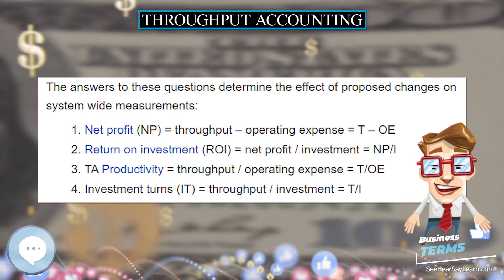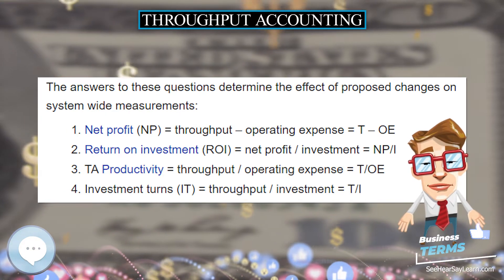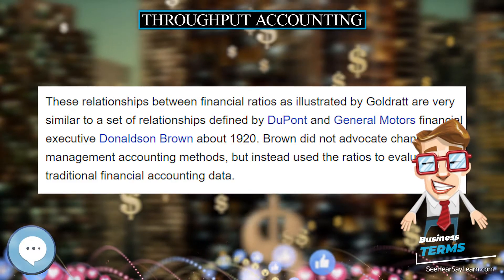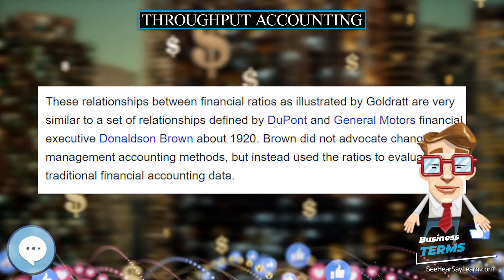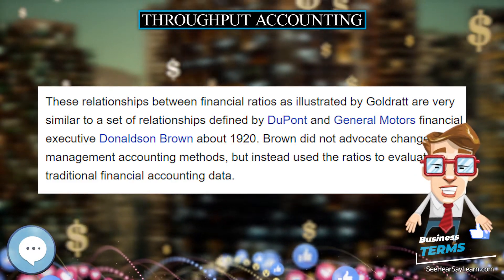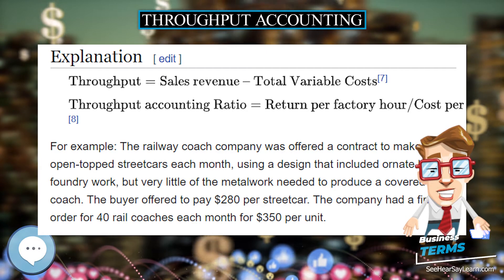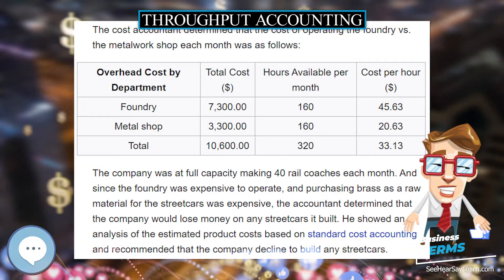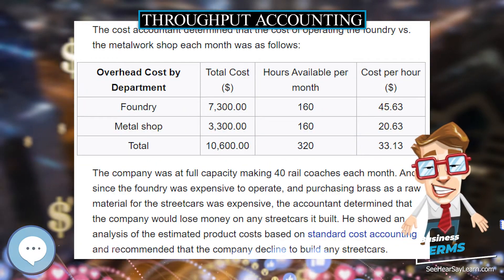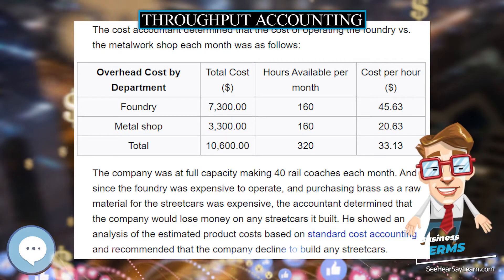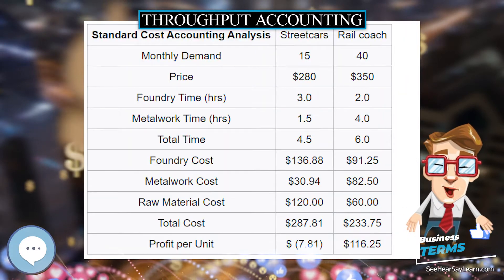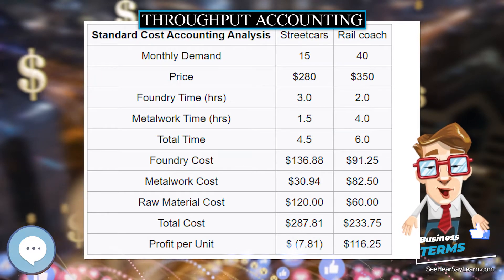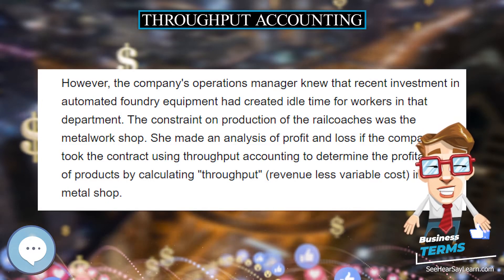When cost accounting was developed in the 1890s, labor was the largest fraction of product cost and could be considered a variable cost. Workers often did not know how many hours they would work in a week when they reported on Monday morning, because timekeeping systems were rudimentary. Cost accountants therefore concentrated on how efficiently managers used labor, since it was their most important variable resource.